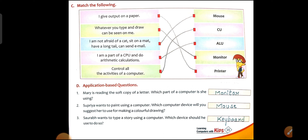Next: Whatever you type and draw can be seen on me. Whatever work we do on the computer is shown on the monitor. That is why the monitor is known as VDU — Visual Display Unit. Next: I am not afraid of a cat, I sit on a mat, I have a long tail, and I can send email — this is our Mouse.